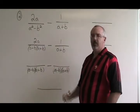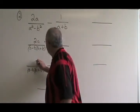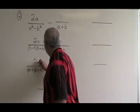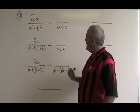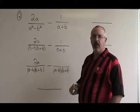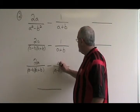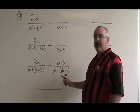The first fraction is already over the common denominator, so it doesn't change. The second fraction, both top and bottom have to be multiplied by a minus b in order to create the equivalent fraction.